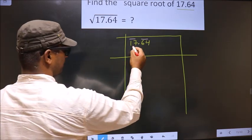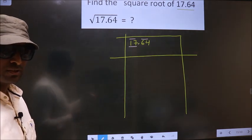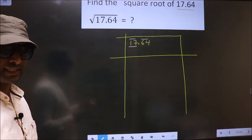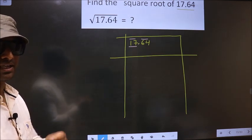Now here we have 17. 17 is not a perfect square. So now we should check. 17 lies between which two perfect square numbers.